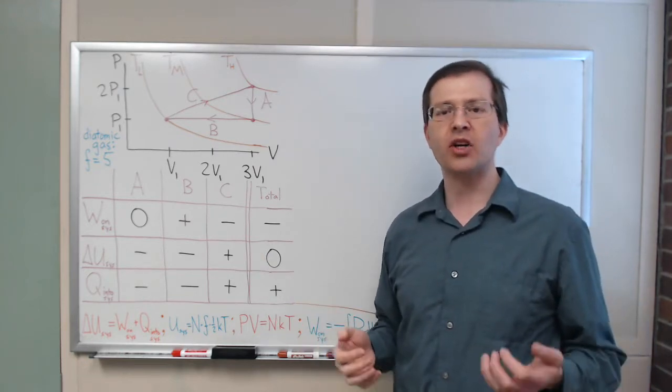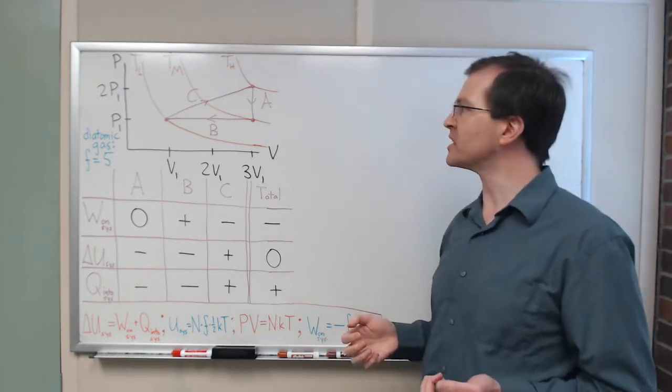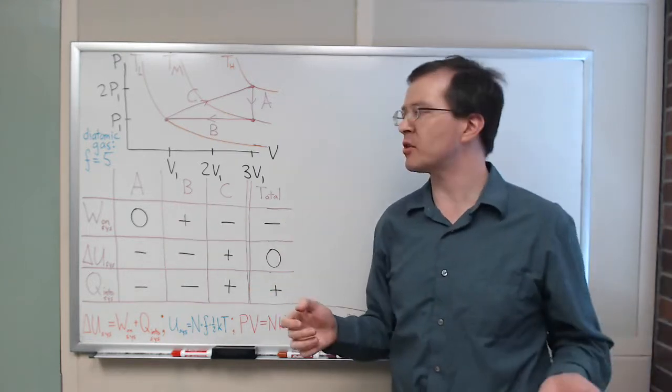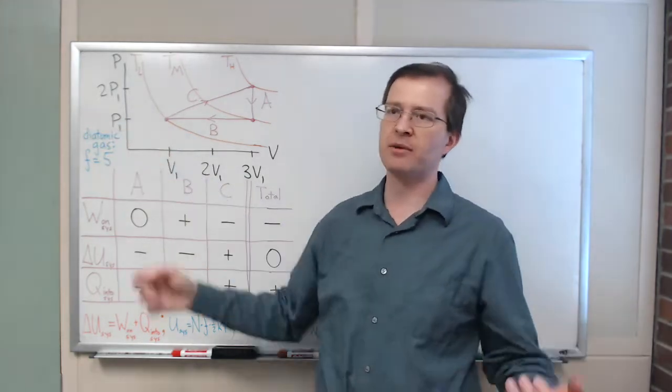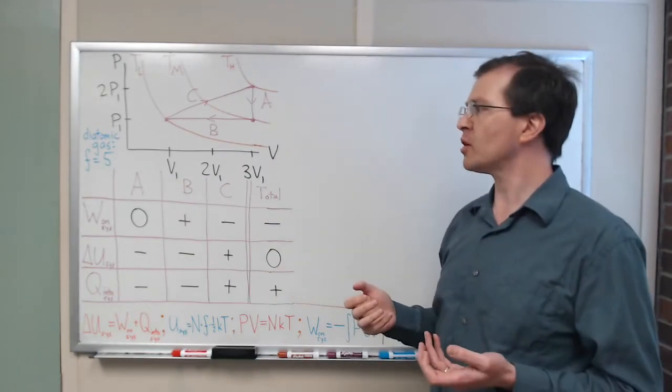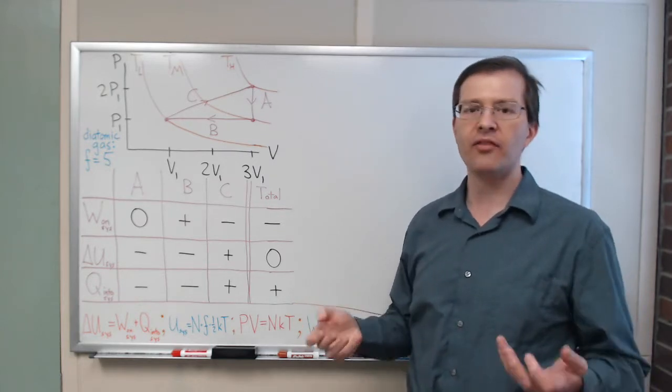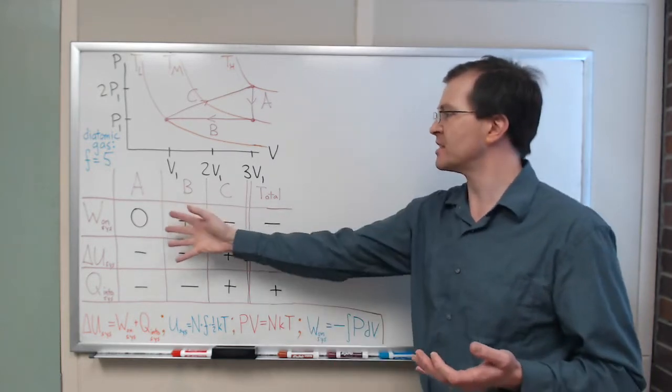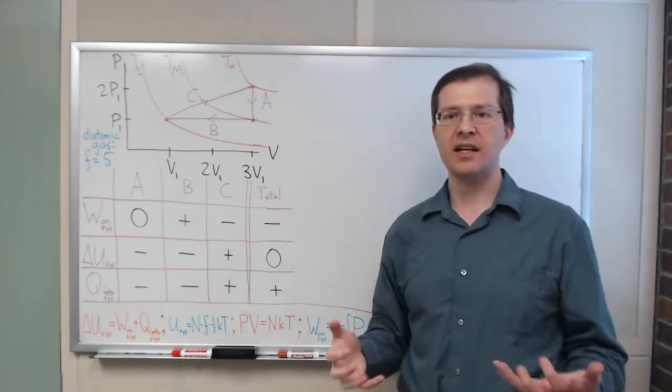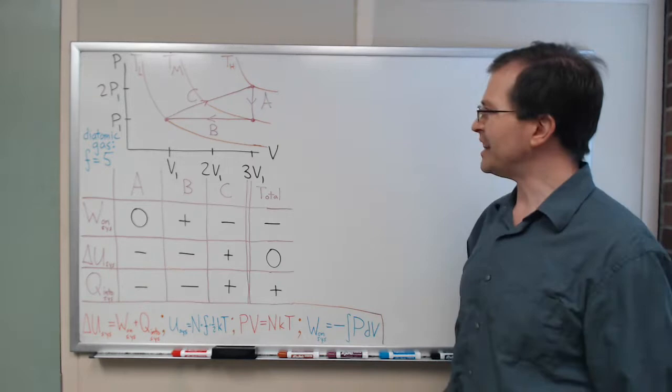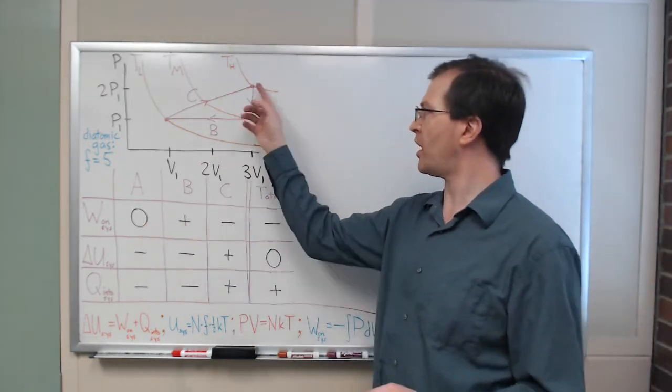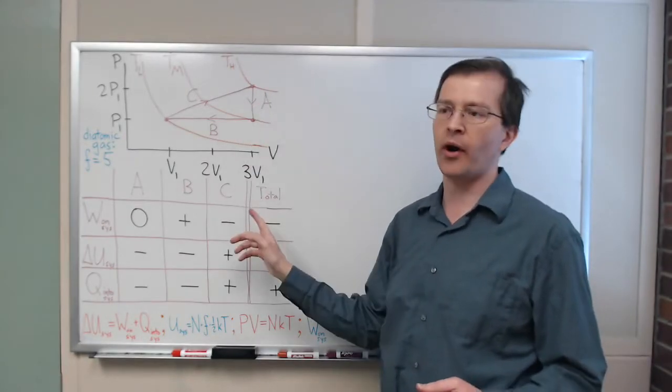Now I want to actually work out the quantitative results. I can't give you numbers because I haven't told you the volume is one liter and the pressure is one atmosphere, but I want to work out in terms of P1 and V1 what goes into these slots. We're going to go through the same process one step at a time. Obviously zero is zero. The work in step A is zero because there's no area under the curve.